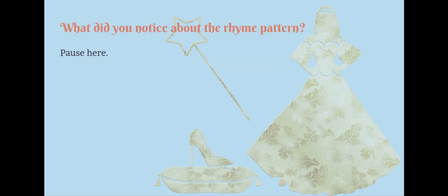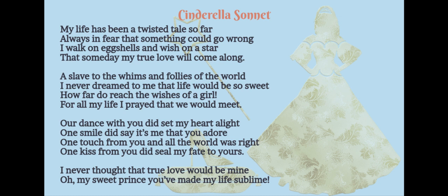What did you notice about the rhyme pattern? I want you to pause for a second as we look back at the sonnet and look at which lines of the poem rhyme. I'm going to read the last word on each line and I want you to figure out which lines rhyme: far, wrong, star, along — world, sweet, girl, meet.